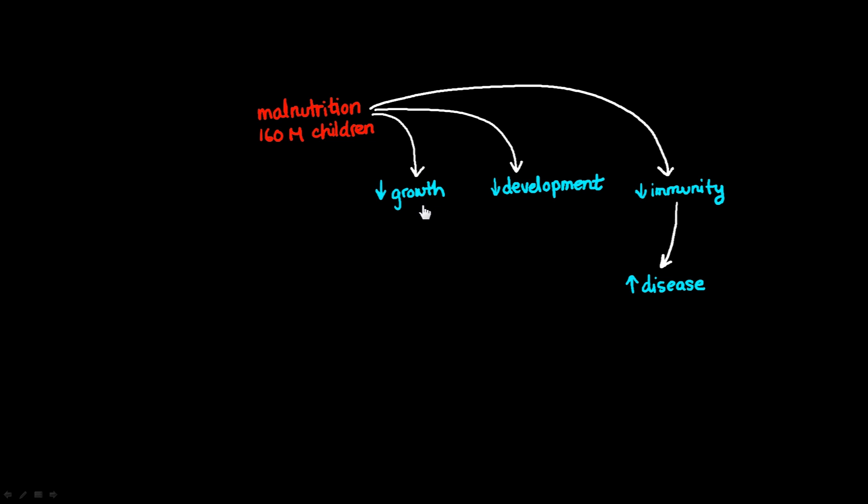So all of these things, delays in growth, delays in development, and an increase in the number and the severity of diseases experienced by the child, all of these things are going to lead to an overall decrease in the lifetime productivity of that child. That child is less likely to be a highly functioning member of the society in which that child lives because of the fact that they're small, that they're unable or less able to learn effectively, and also that they're often ill.